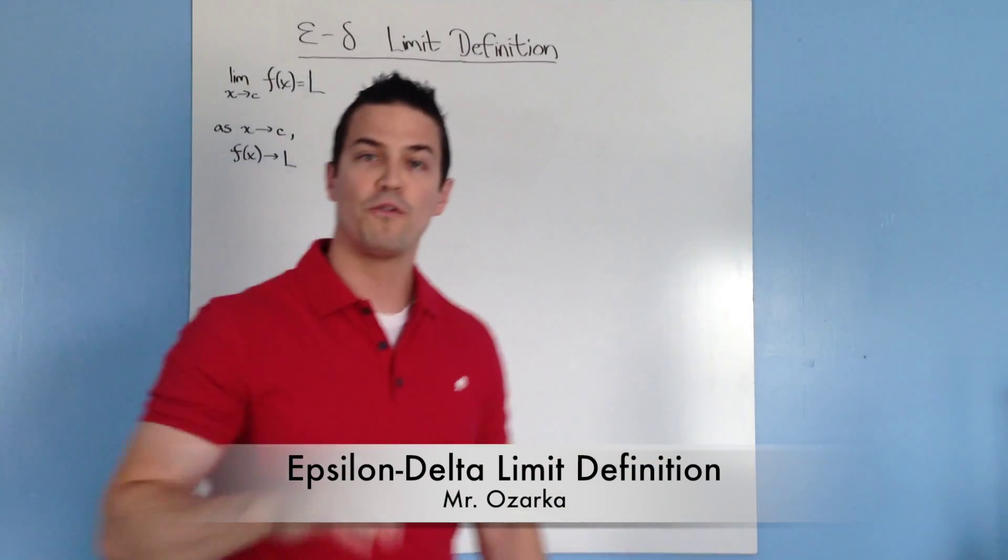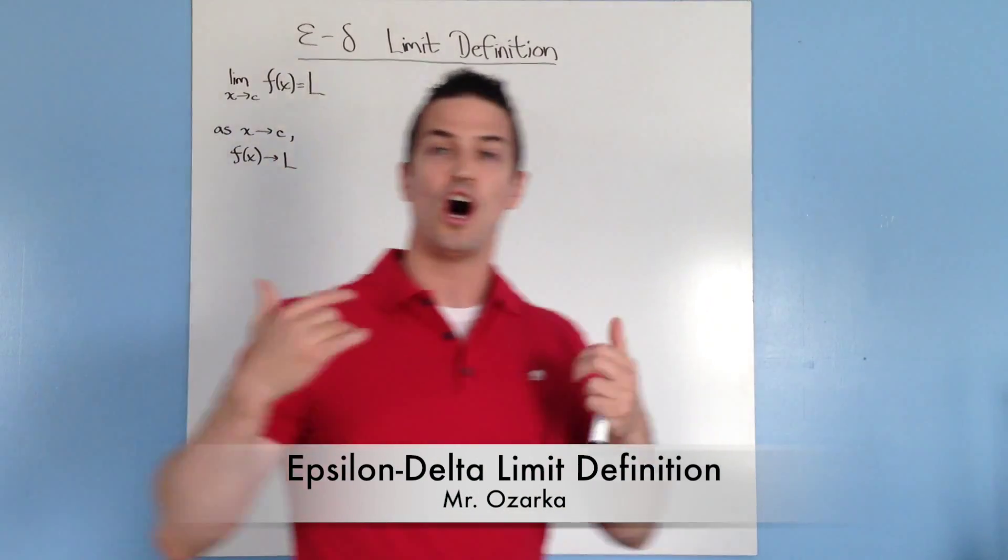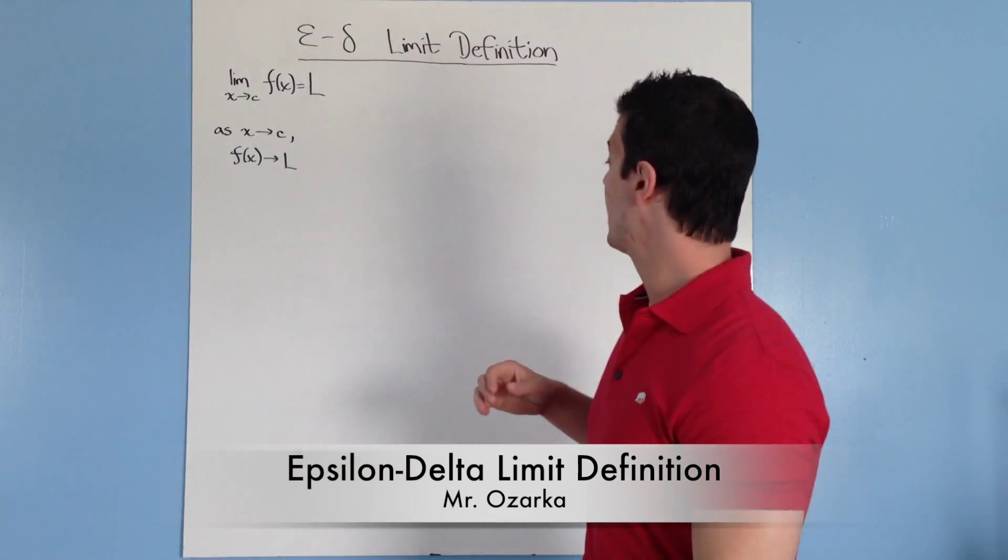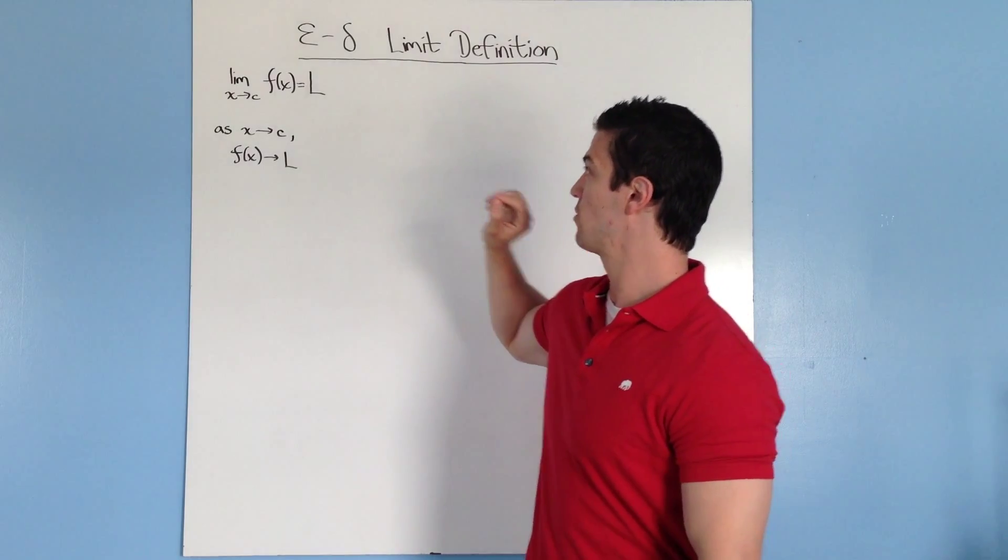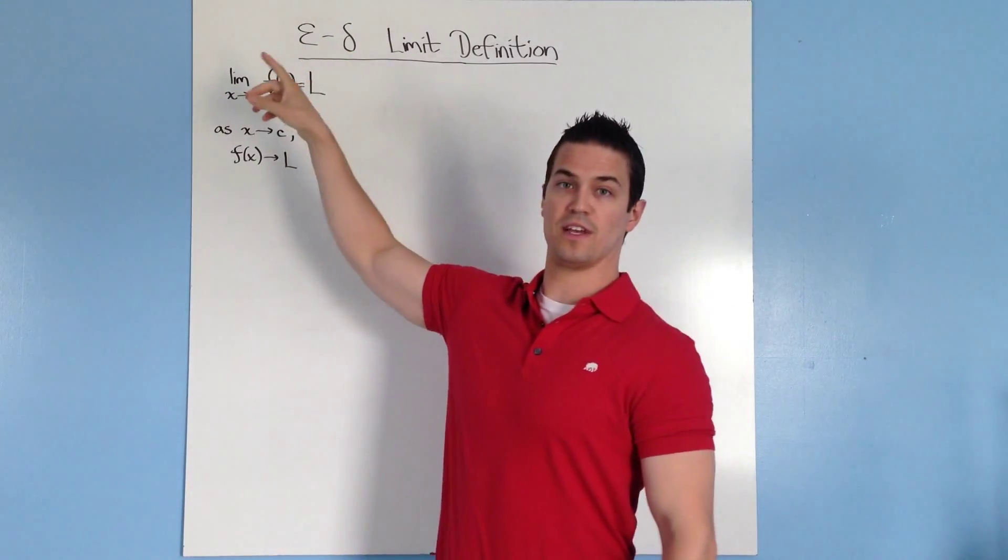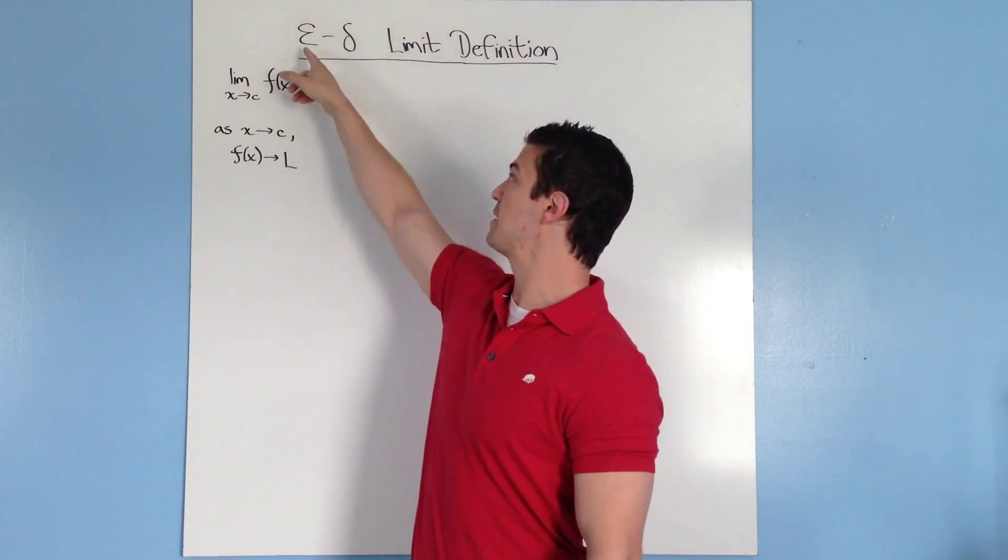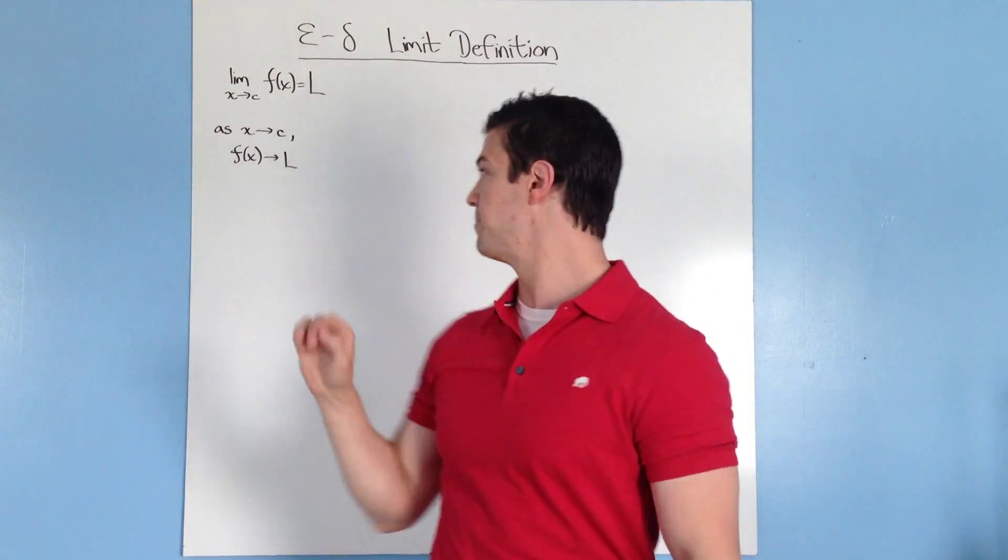Okay, so today we're going to be going over a more formal definition of what a limit is. It's going to be called the epsilon-delta limit definition. I'm going to go over what these variables are, but it's just Greek letters epsilon and delta.